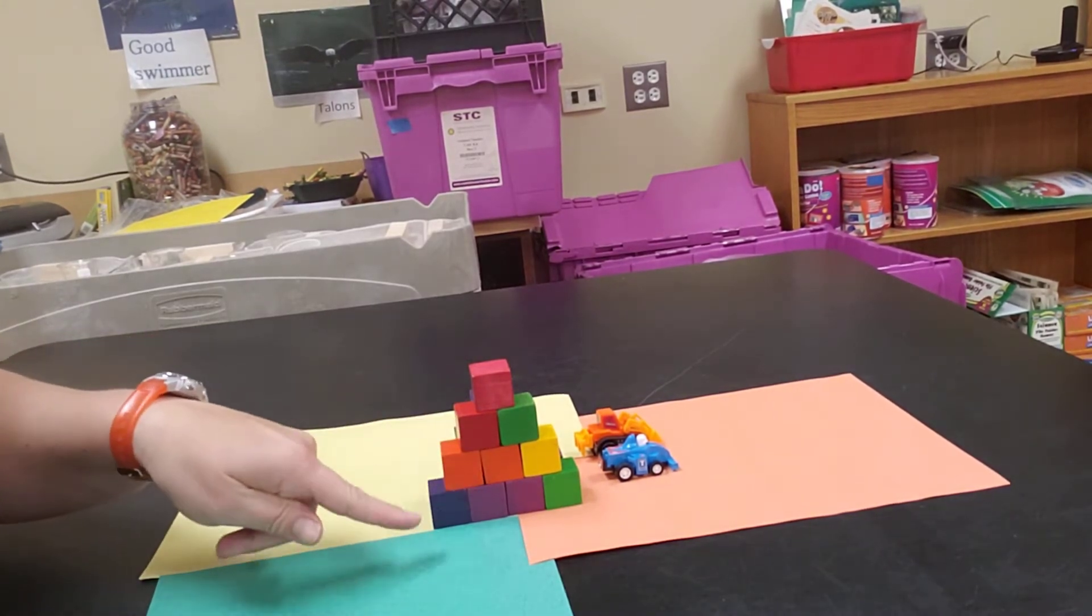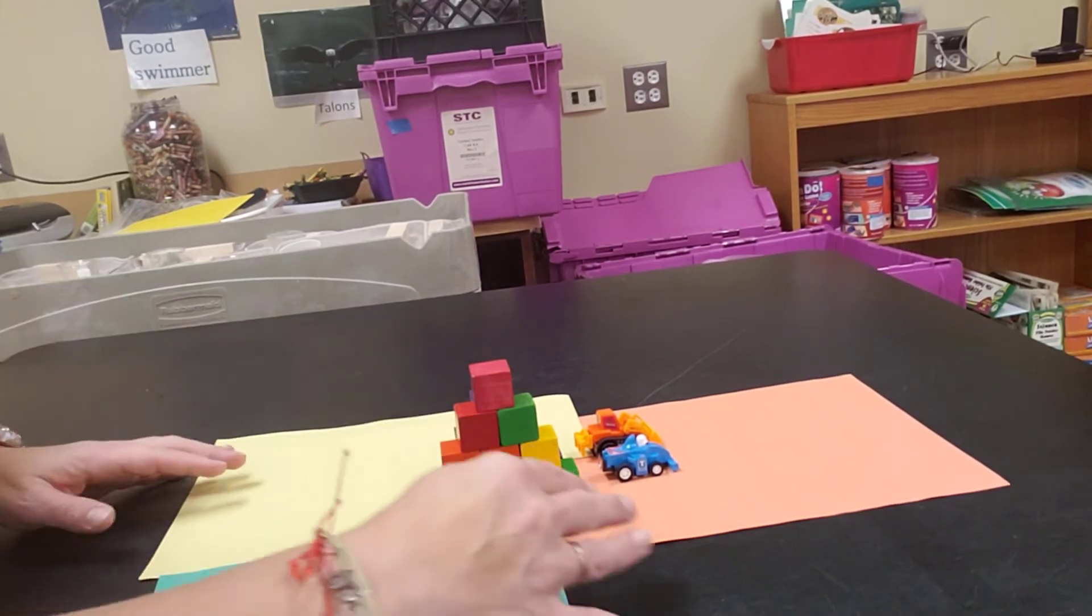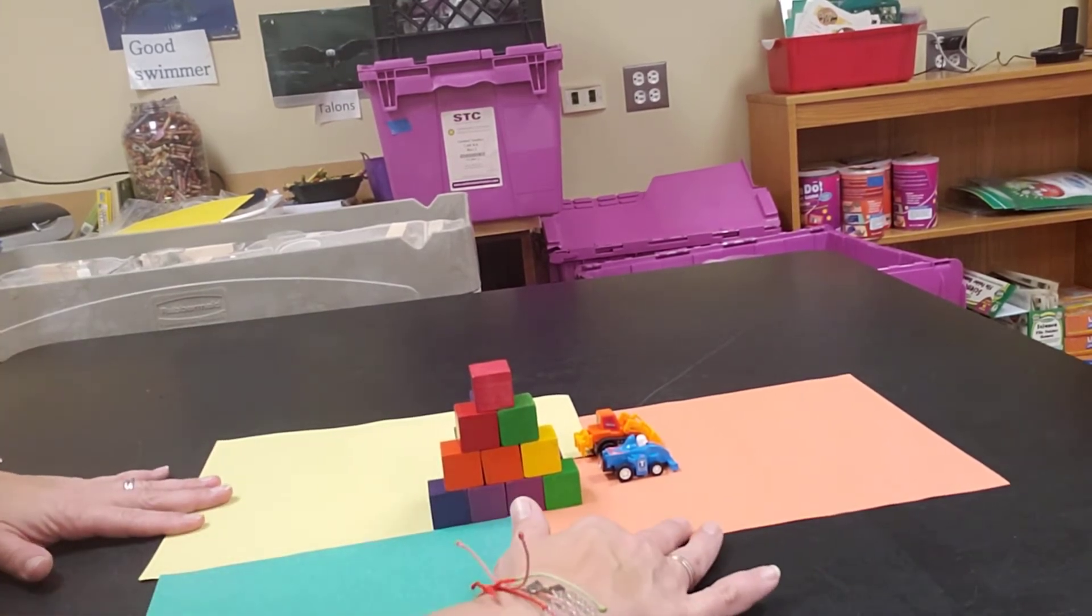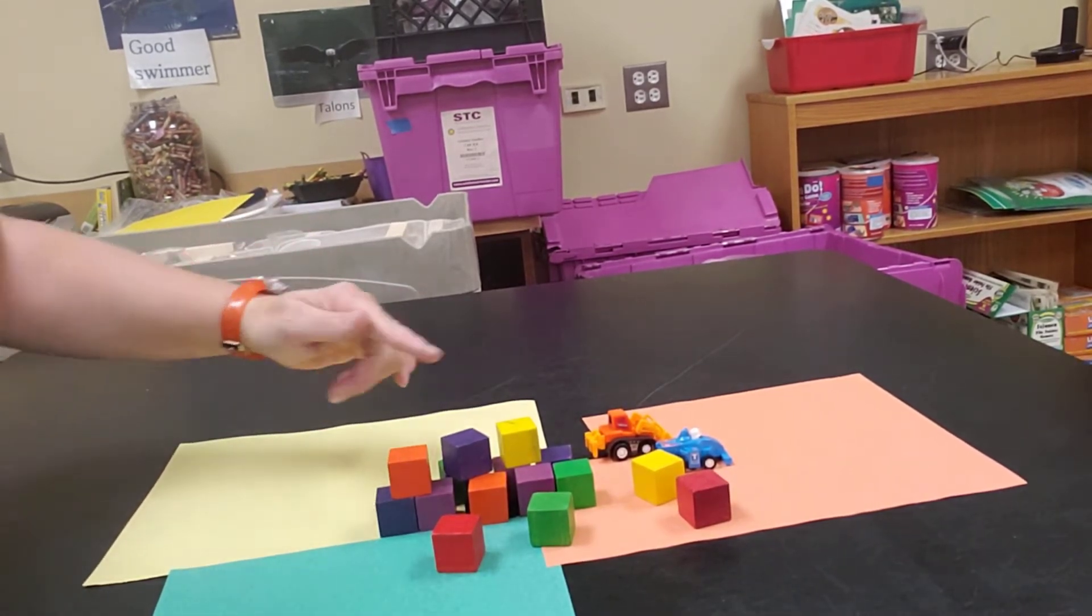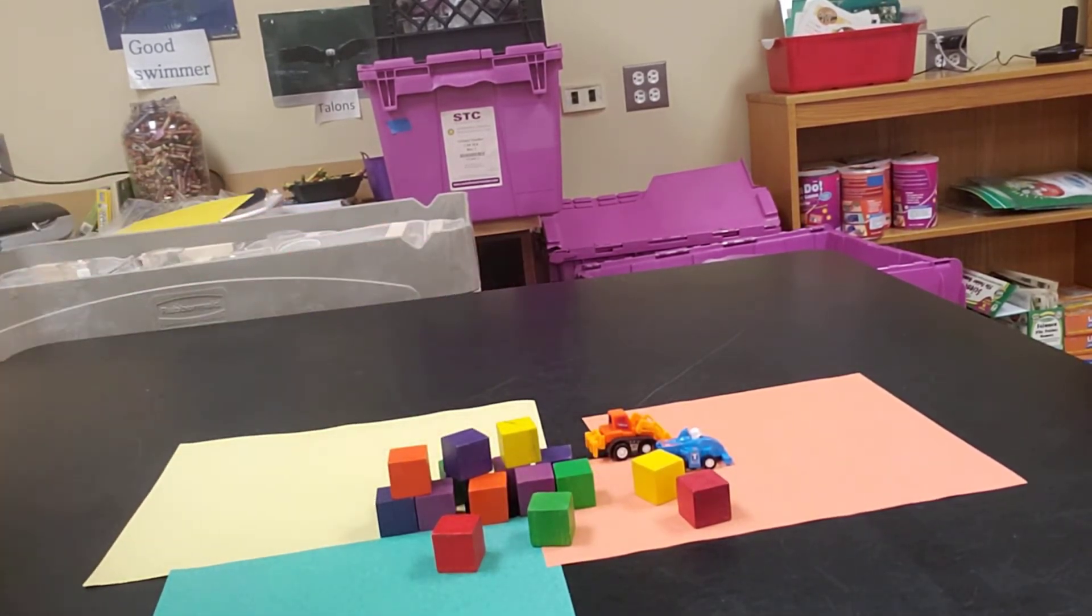So here we have the representation of a building and if we have an earthquake and we have these plates move apart, we can see what happens to the buildings and how everything is affected around it.